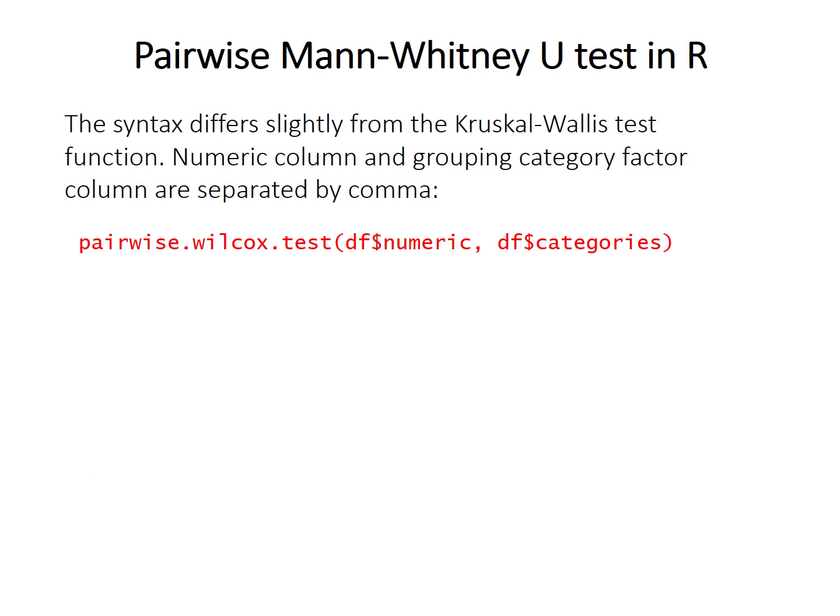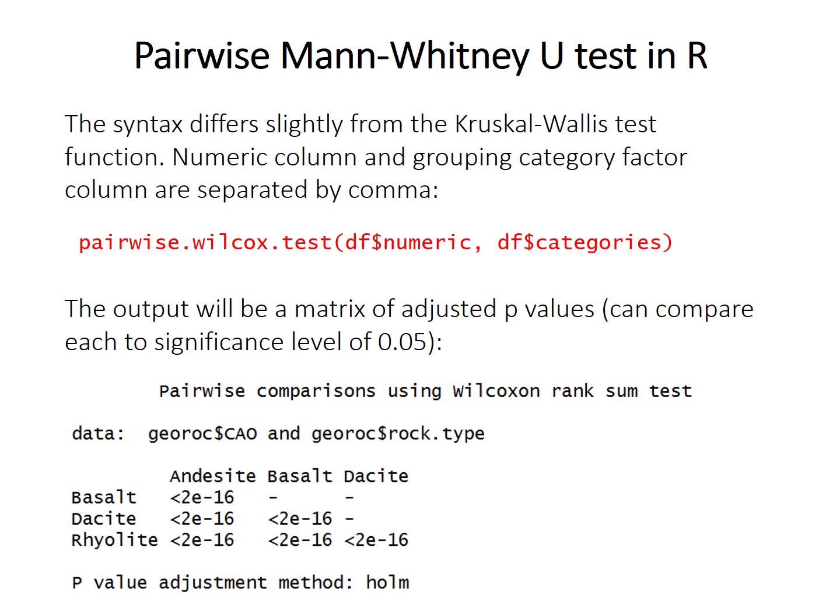The pairwise Mann-Whitney U test function is a bit different in format. You'll need to specify the data frame and columns using the dollar symbol style, and you separate the numeric data and categorical grouping factors with a comma, not a tilde formula. The output will be a matrix of adjusted p-values — rather than adjusting the significance level, the p-value in R is adjusted so you can compare each one to the traditional 0.05. Each entry in the triangular matrix gives the p-value for the comparison between the row-label sample and the column-label sample. The p-value adjustment method is specified at the bottom; in this case the Holm method, which is the default and generally preferred.